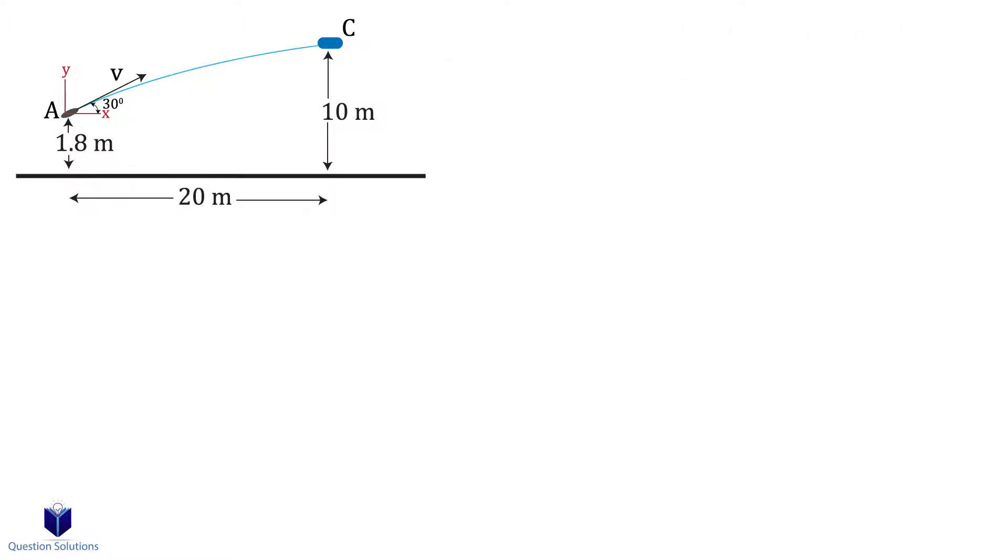The starting location in the horizontal direction is 0 meters. Location C is at 20 meters. The velocity in the horizontal direction is v cos 30 degrees.